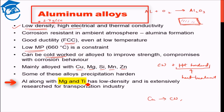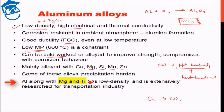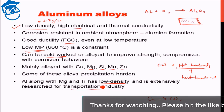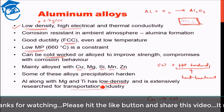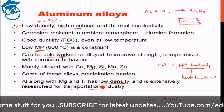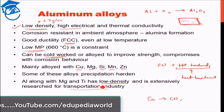Aluminium, along with magnesium and titanium, forms a combination of low-density elements that are extensively researched for the transportation industry. The transportation industry wants to save fuel, which is achieved by reducing the weight of vehicles by finding new materials with good strength at low density. That is where aluminium, magnesium, and titanium come into play — all three have very low density compared to copper or iron.